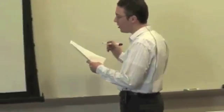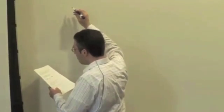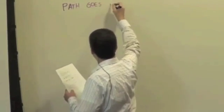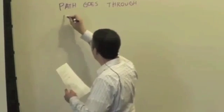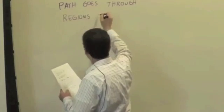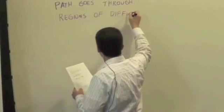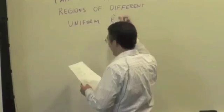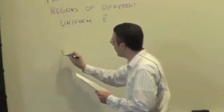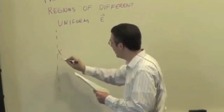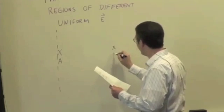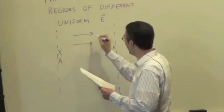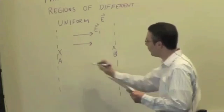And the first is the simplest case where the path goes through different regions, or it goes through regions of different uniform electric fields. So, for example, if I have some part of the path in this region, there's point A and there's point B. And along A to B, let's say I know the electric field is pointing in this direction, call it E1, and it's uniform throughout this entire region.